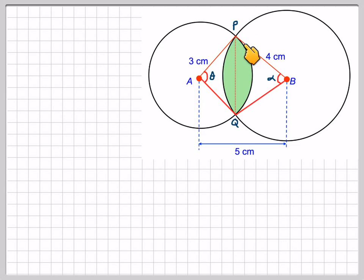What we need to do is draw a line connecting P and Q, these points where the two circles intersect. What we see is that we have two segments. So we find the area of this segment and the area of this segment and then add them together.